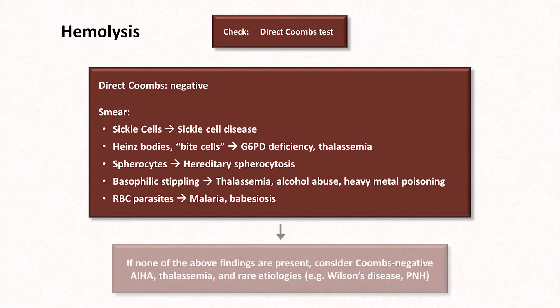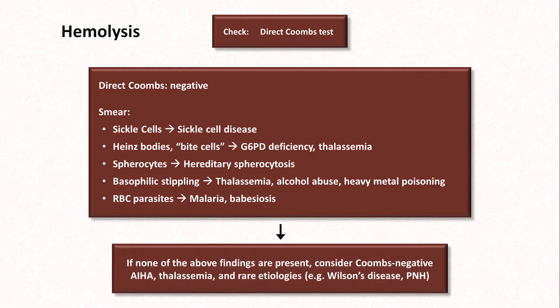If none of the above findings are present but the patient is definitely hemolyzing, consider Coombs-negative autoimmune hemolytic anemia, thalassemia, and rare etiologies like Wilson's disease and paroxysmal nocturnal hemoglobinuria.